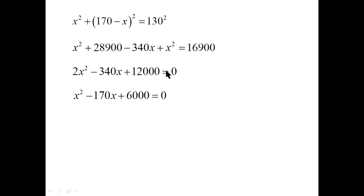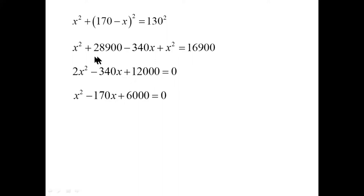Because it's equal to zero, we're allowed to divide through by a constant factor like two. Two goes into each term, so we can divide through by two. You can't do this if it says f(x) equals 2x squared minus 340x plus 12,000. But you can when that whole quadratic is equal to zero — you can divide through by two.